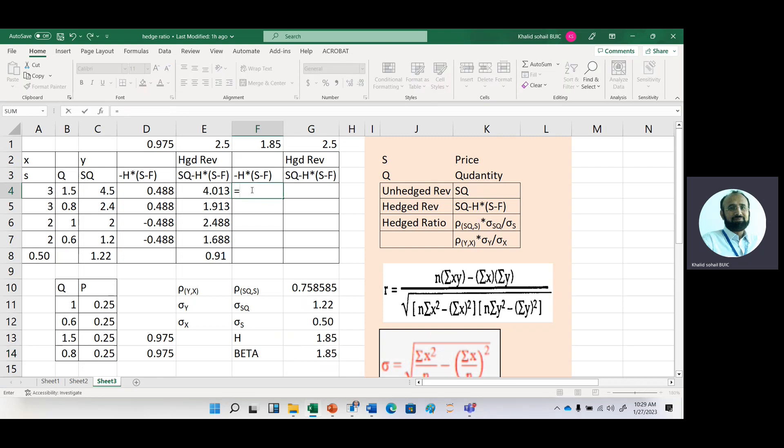Now calculate again by using this optimal number of contracts multiplied by spot price minus forward price that should be fixed.